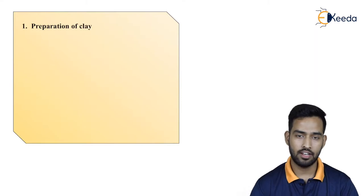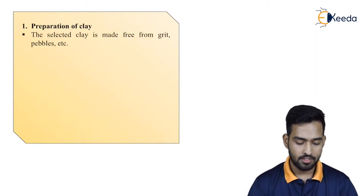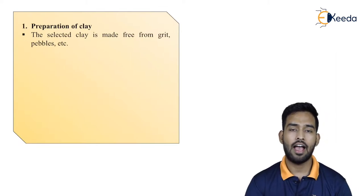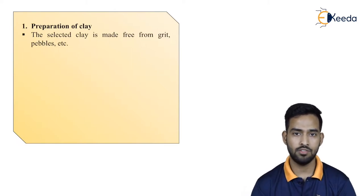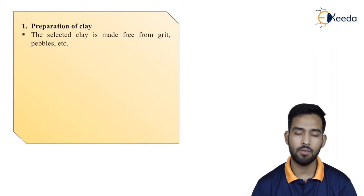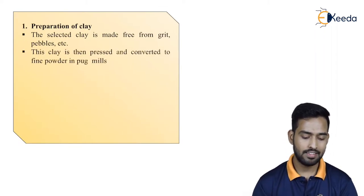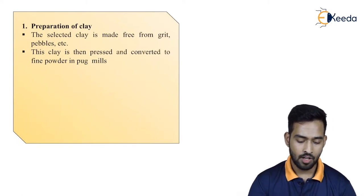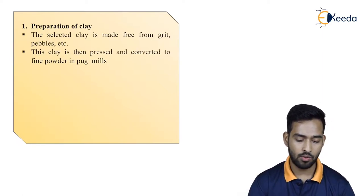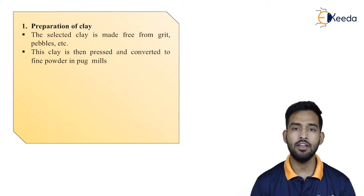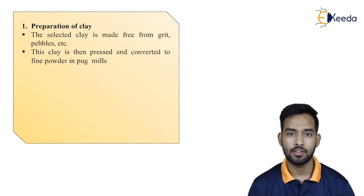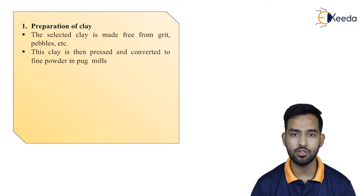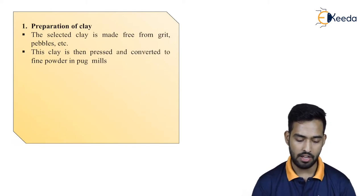First is preparation of clay. The selected clay is made free from grit, pebbles, etc. Any clay useful for ceramic materials is chosen and made free from grit or pebbles. This clay is then pressed and converted to fine powder in pug mills, where excessive pressure is applied to grind it into fine powder form.